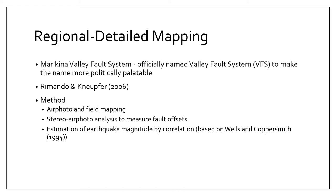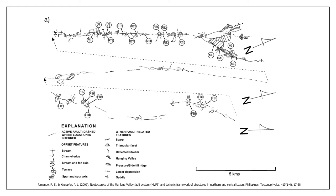Remando and Nufer did airphoto and field mapping, and also used stereo airphotos to measure fault offsets. The modern equivalent of this is to use LiDAR, which can provide really high-resolution elevation data from which you can get a good estimate of fault offsets. They also estimated earthquake magnitude from correlation of displacements with magnitude, relying heavily on the study of Wells and Coppersmith. This is an excerpt from their study showing their geologic mapping of the area.